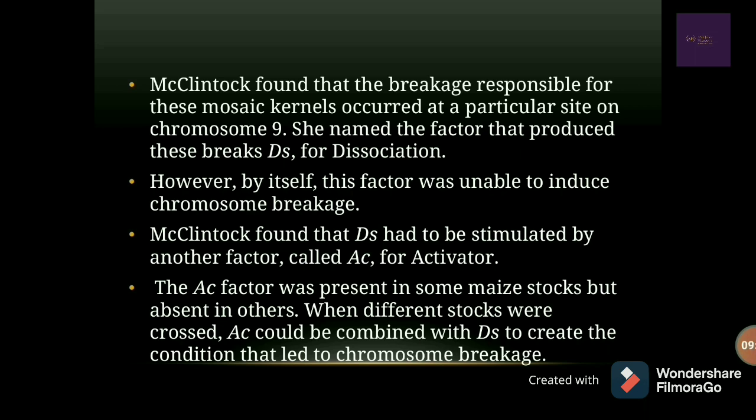However, by itself, the DS factor was unable to induce any chromosome breakage. McClintock found that DS had to be stimulated by another factor called AC, or activator. The AC factor was present in some maize stalks but absent in others. When such stalks were crossed, AC could be combined with DS, which led to chromosome breakage.